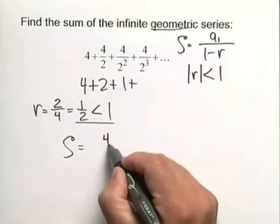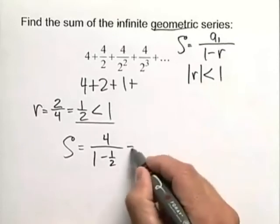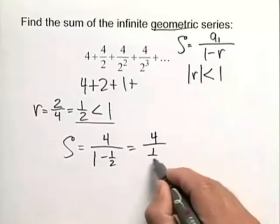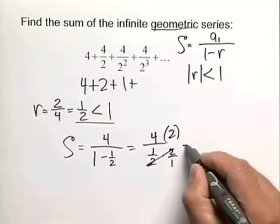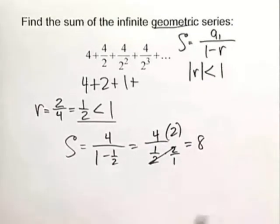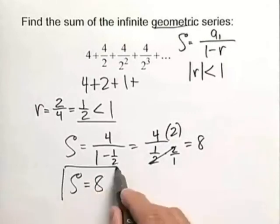So a sub 1 in this case is 4, all over 1 minus 1 half. From this we have 4 all over 1 half. Invert and multiply here, top and bottom, and let's cancel out, and we get a value of 8. So our infinite sum for this particular geometric series is 8.